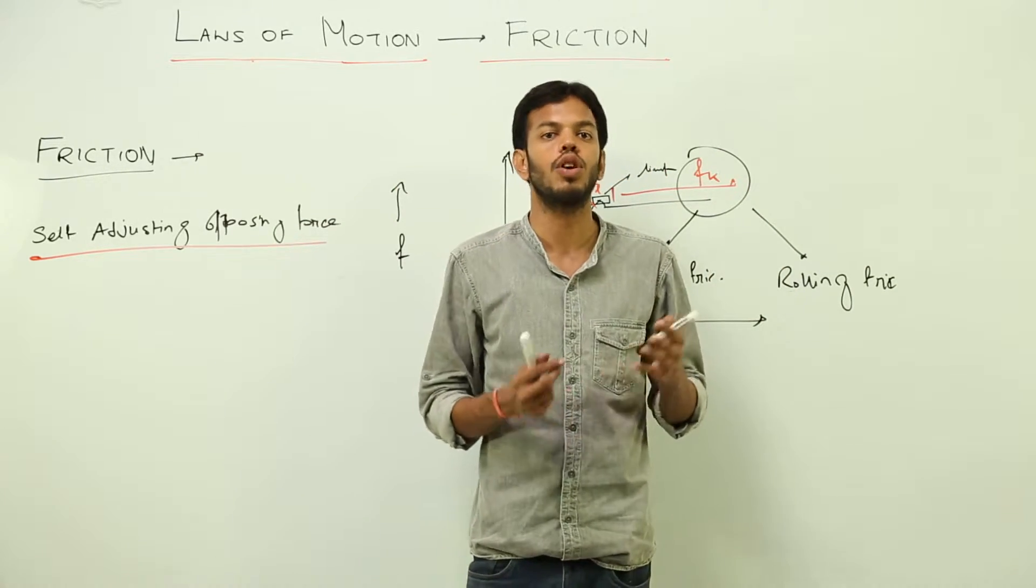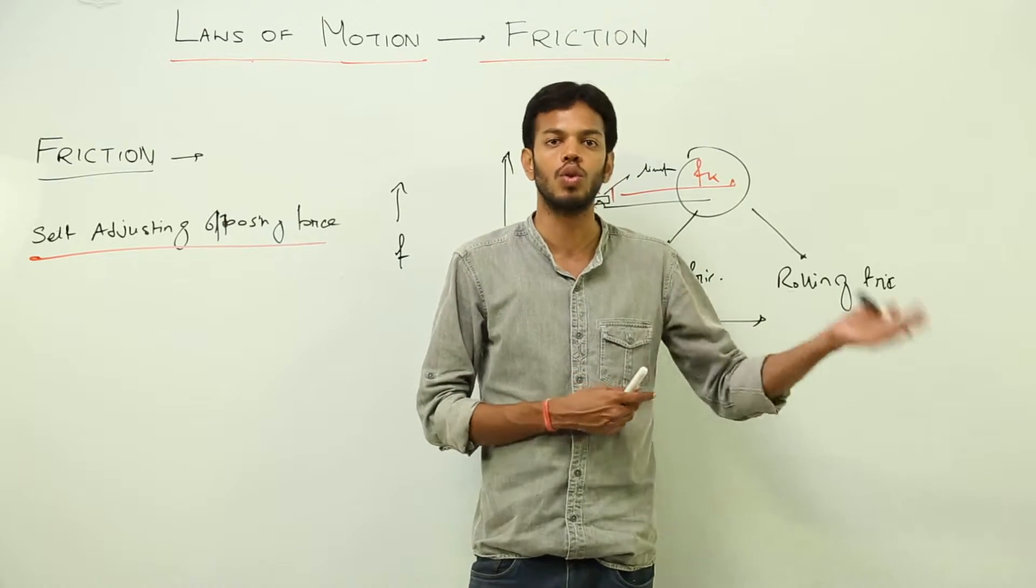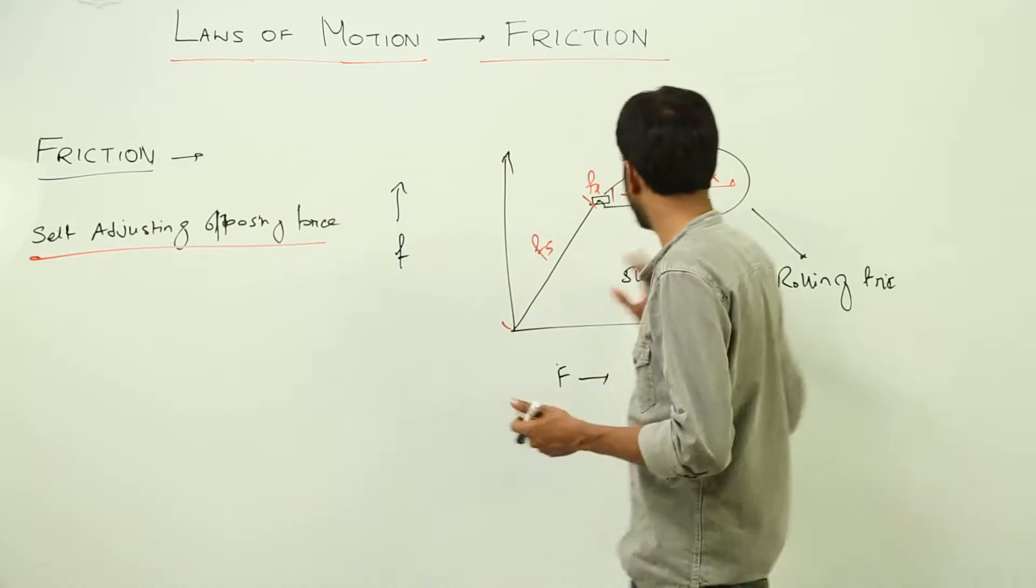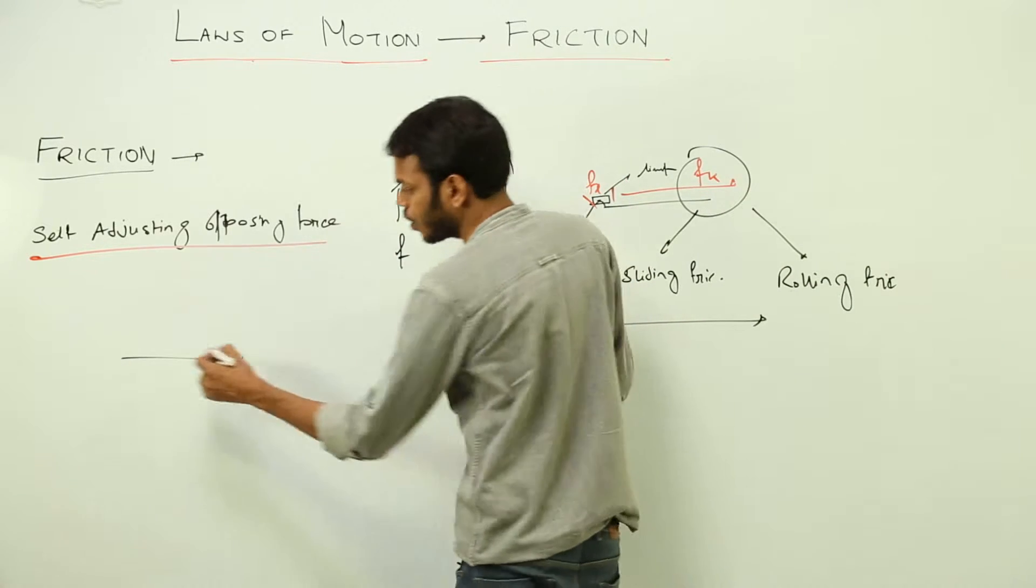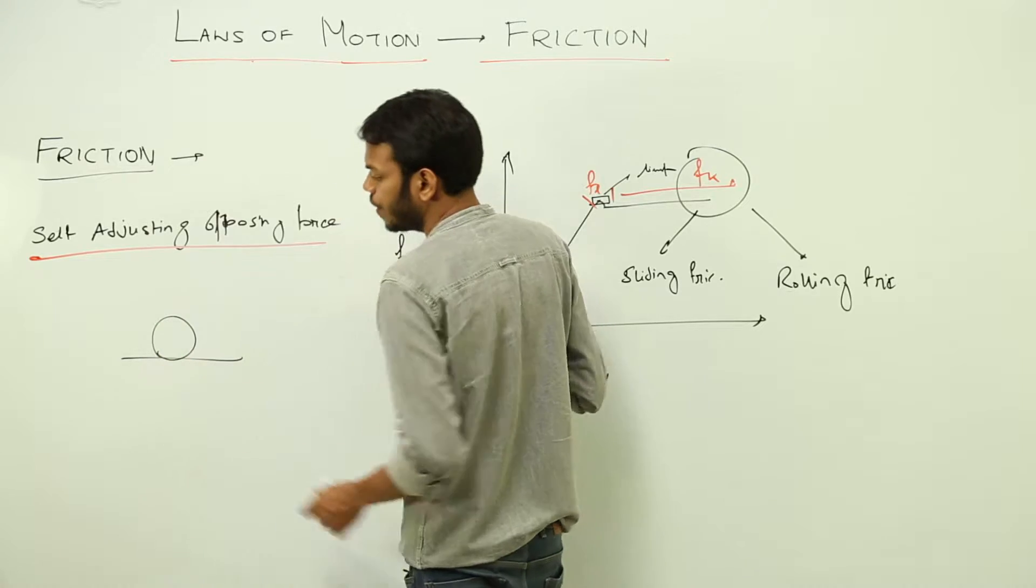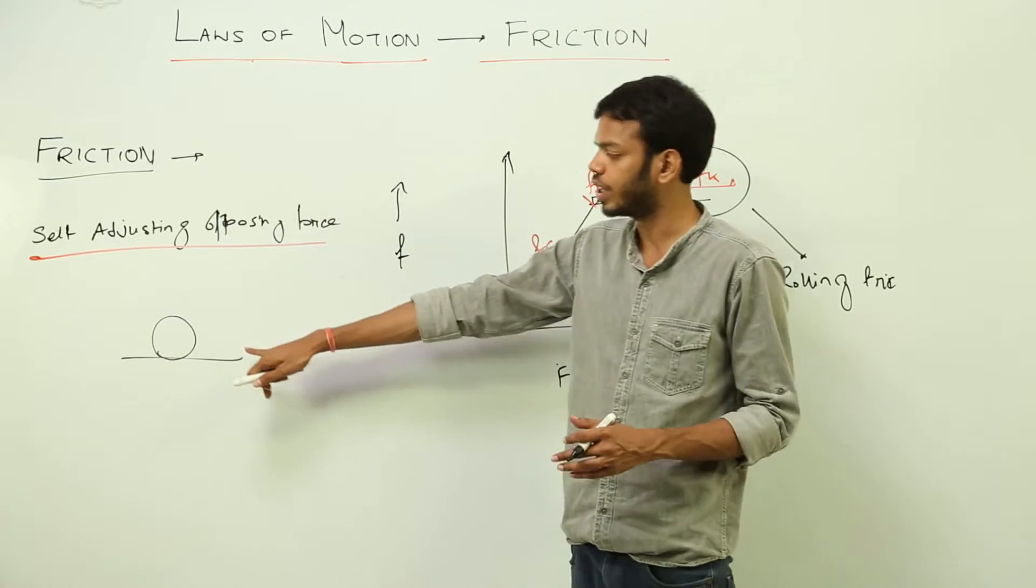Obviously not square or rectangular bodies are going to roll on another body. The circular part, this is the point. I am making a circular part, okay? This is a circular wheel which is trying to move over this body.